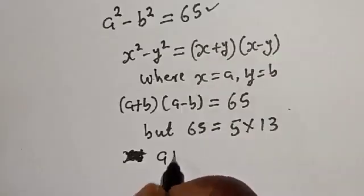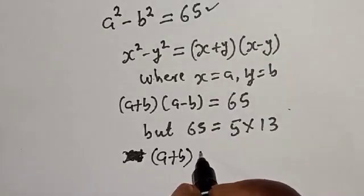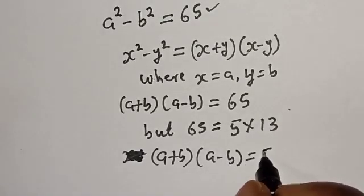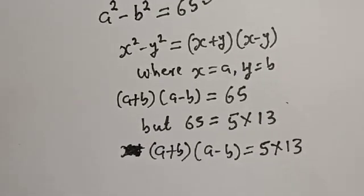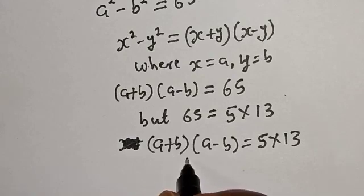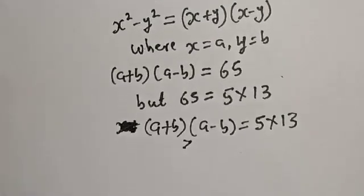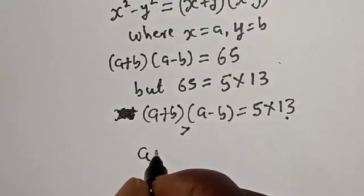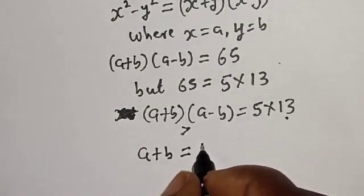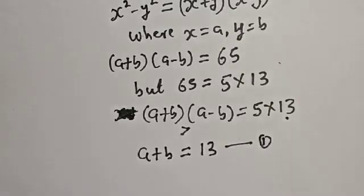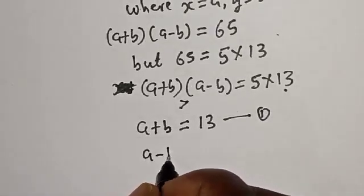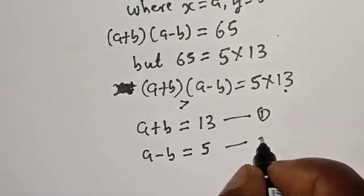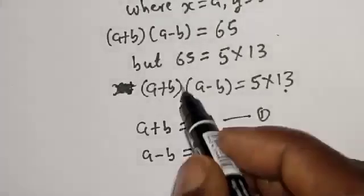Now 65 is equal to 5 multiplied by 13. For an integer solution, a plus b multiplied by a minus b equals 5 multiplied by 13. Since a plus b is greater than a minus b, we have 13 is greater than 5. Therefore a plus b equals 13 — call this equation 1 — and a minus b equals 5 — call this equation 2, where a and b are positive integers.